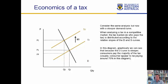So if you go into a marketplace and place a $2 tax on, say, cigarettes, because of the steepness of the demand curve, the market will work this out and consumers will pay the bulk of the tax.